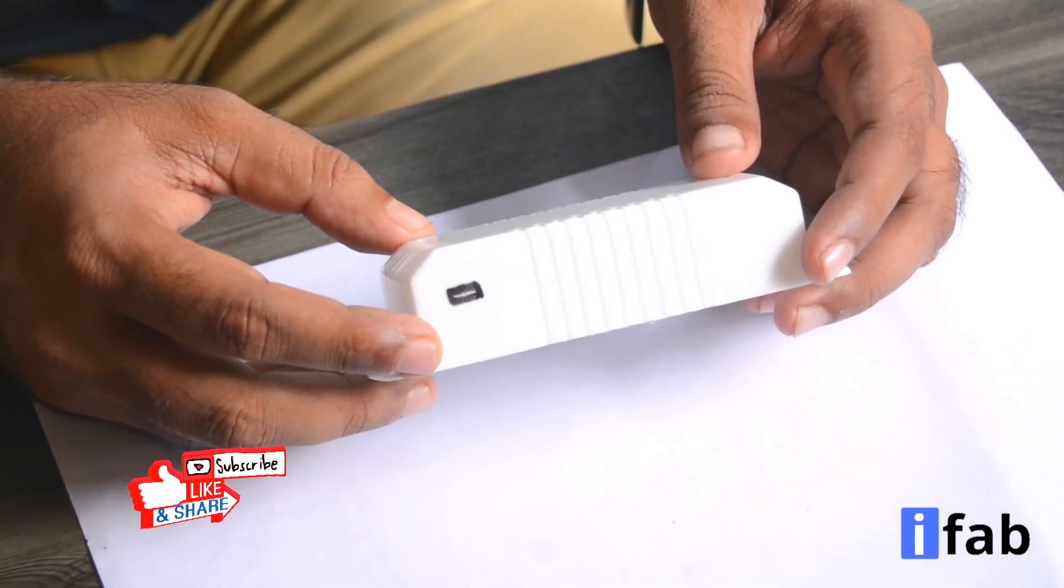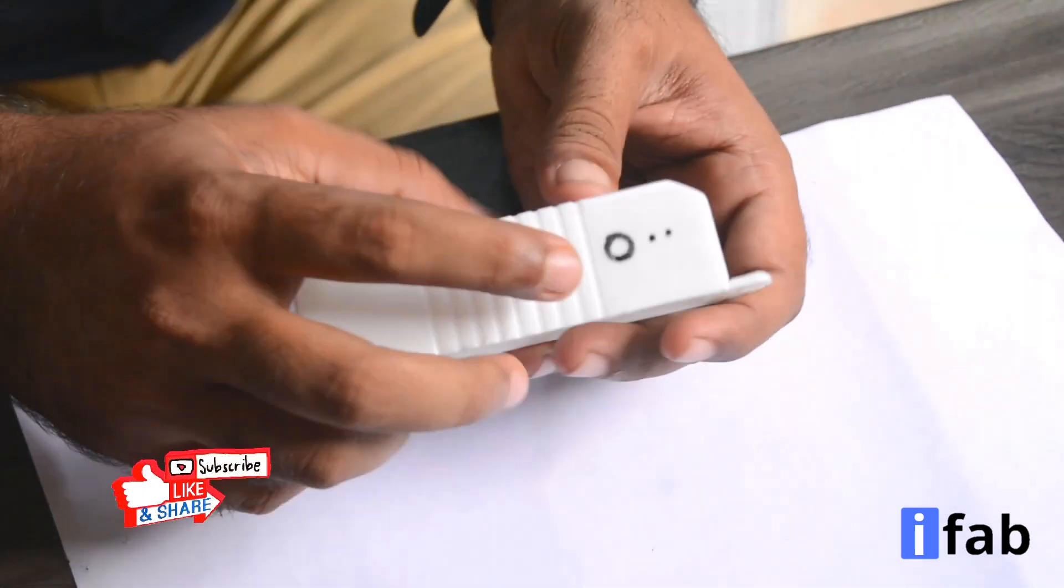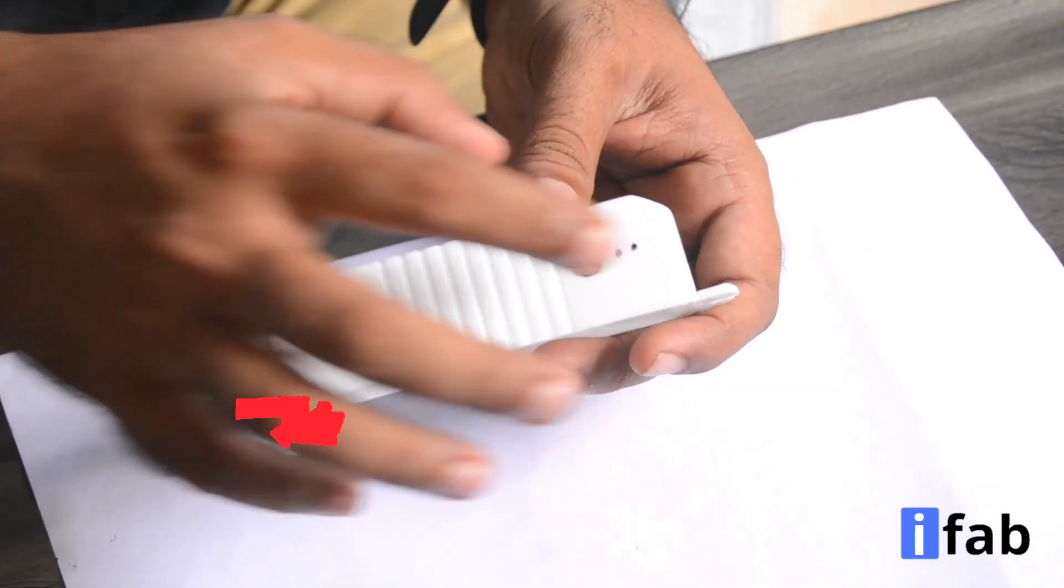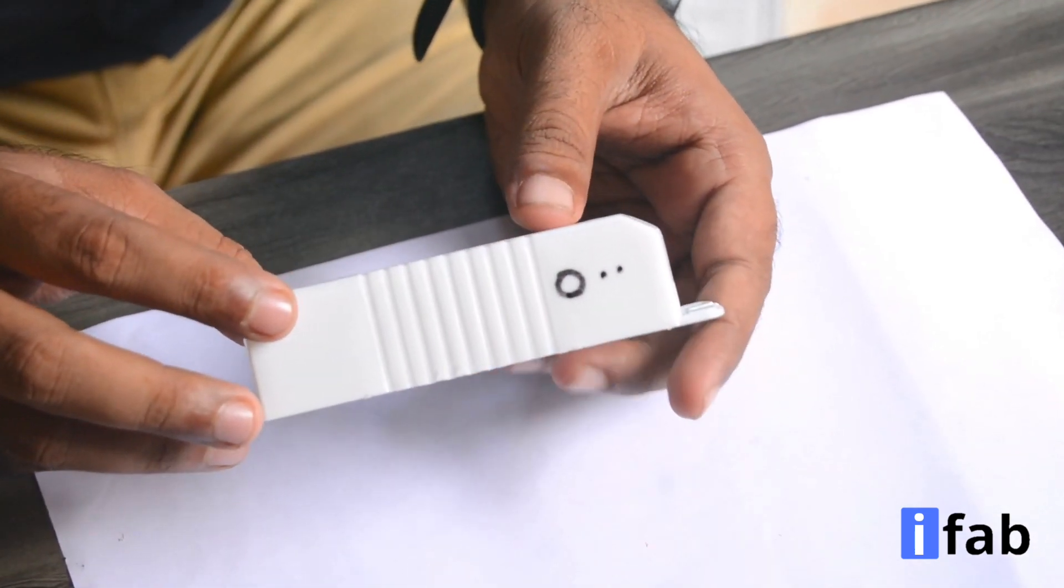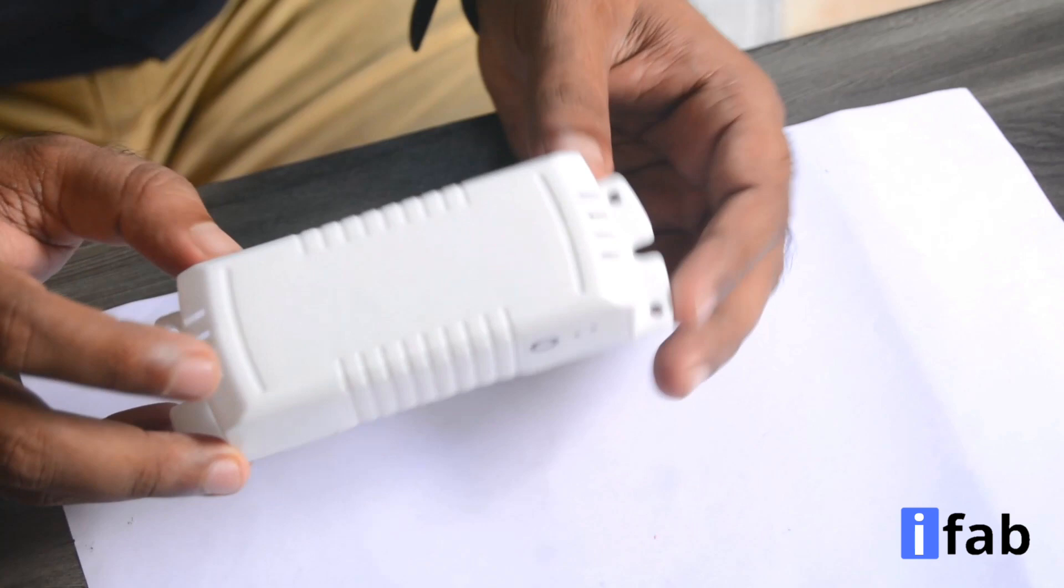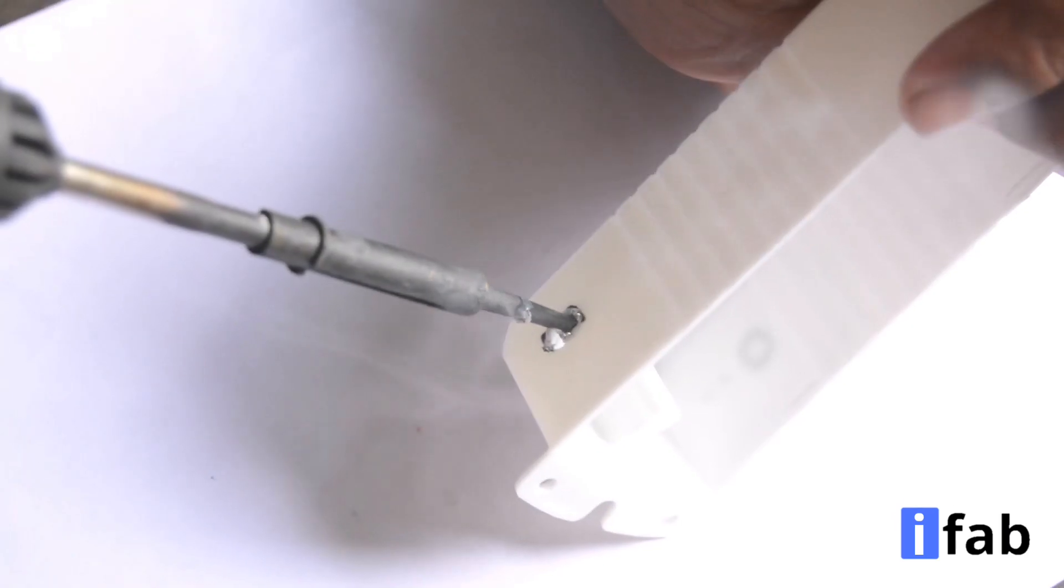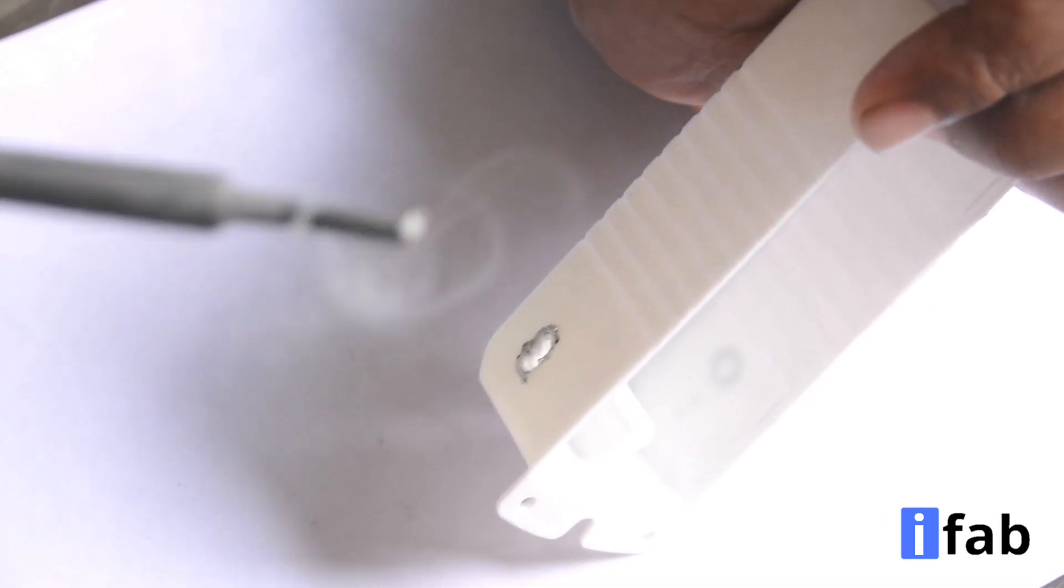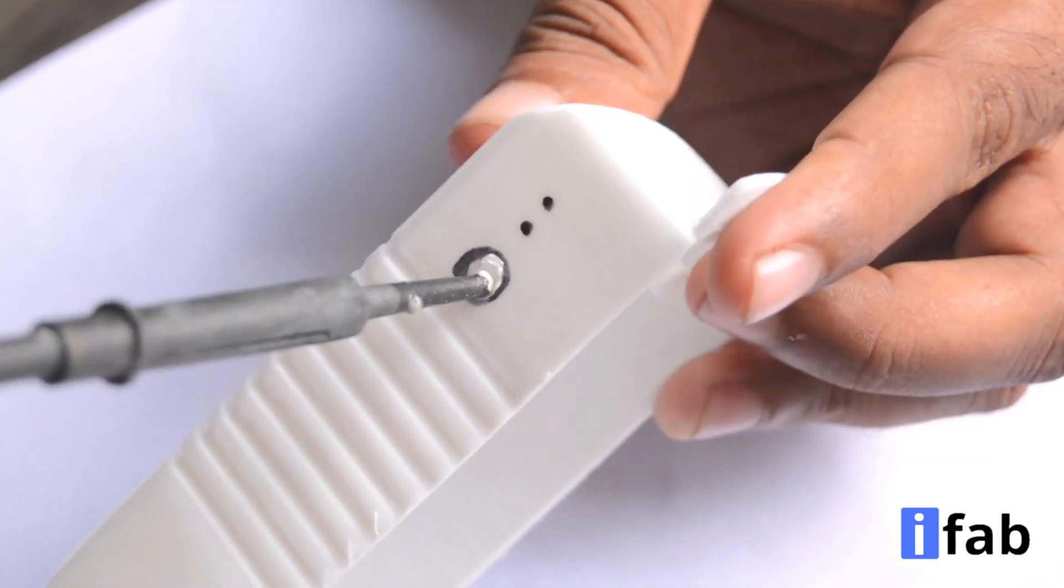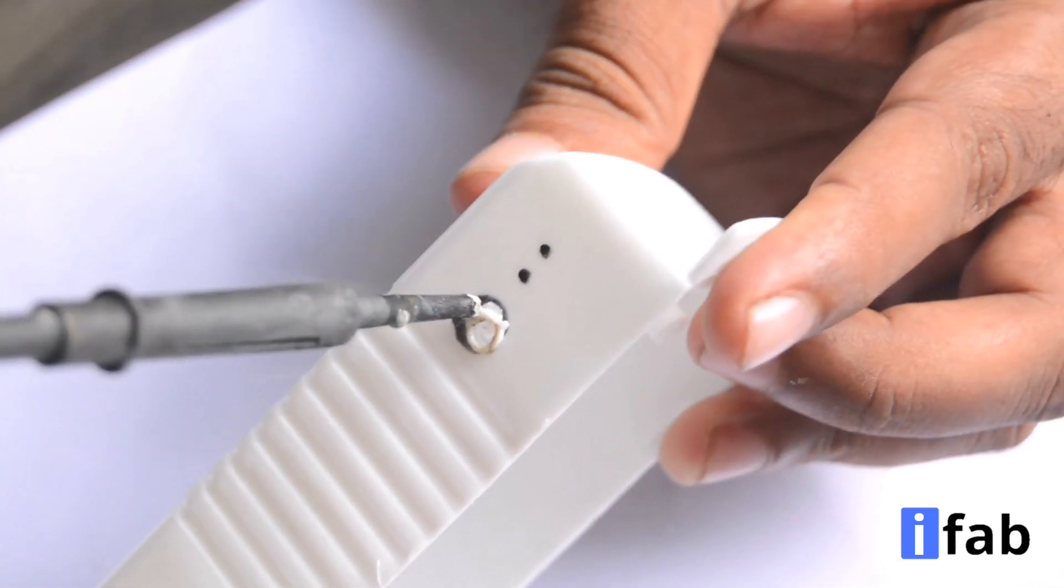First take the electronic choke case. Here we need to put some holes to place the USB connector, LEDs and switch over the case. You can use your soldering iron or drill to make this hole.